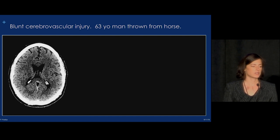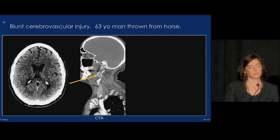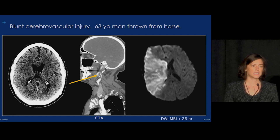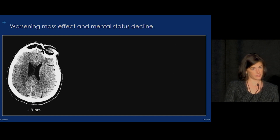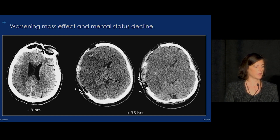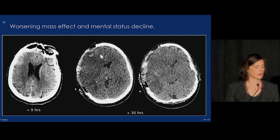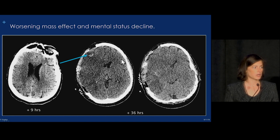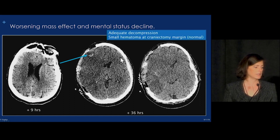Our next case is a patient who had a blunt cerebral vascular injury. His initial head CT was negative. He got a CTA, and we see a very good example of intraluminal thrombus, which was a sequela of a dissection. Unfortunately, he went on to develop a large infarct. His mass effect worsened to the point of mental status decline, and he underwent a decompressive hemicraniectomy. We can see a large craniectomy defect giving the brain lots of room, but there is still significant midline shift. Small hemorrhages at the margin of the craniectomy defect are common and not a complication as long as there's no associated mass effect.